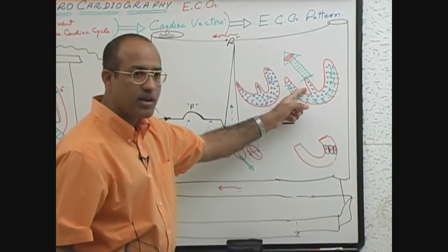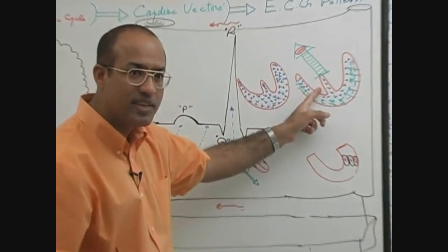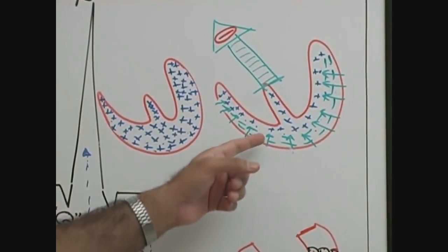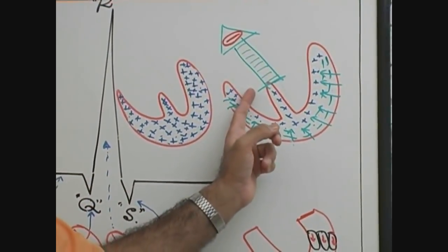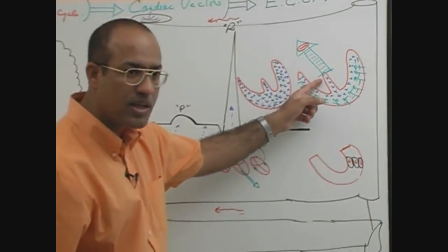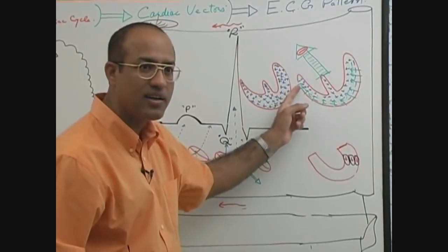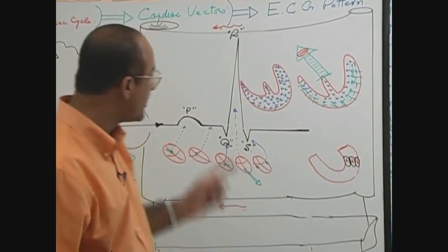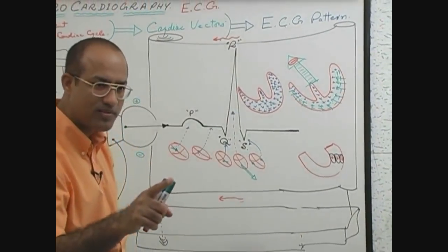Septal depolarization suddenly occurs and completes. Then major ventricular depolarization comes, and when major ventricular depolarization is completed, basal ventricular depolarization comes. So the depolarizing vectors for the septum, major part, and basal part are recognized by the needle independently, producing 3 independent waves.